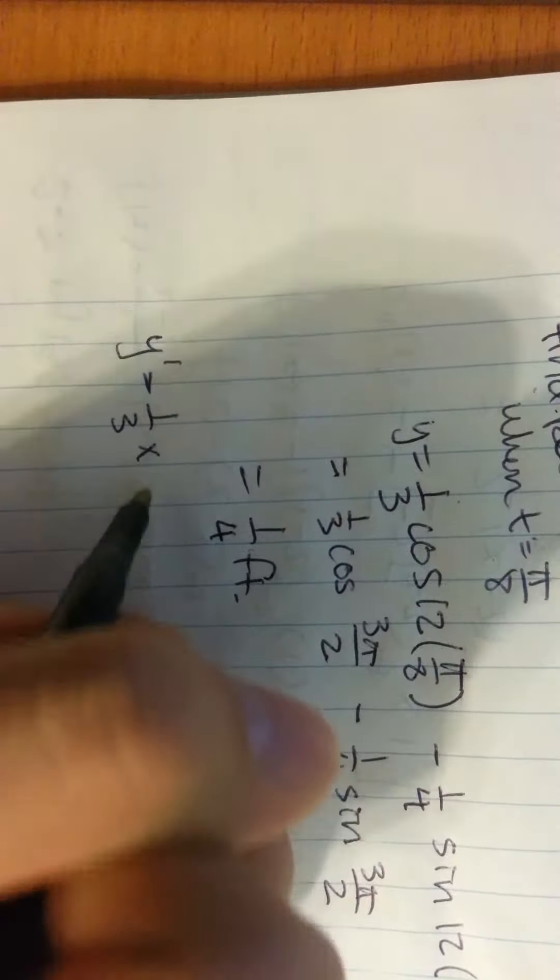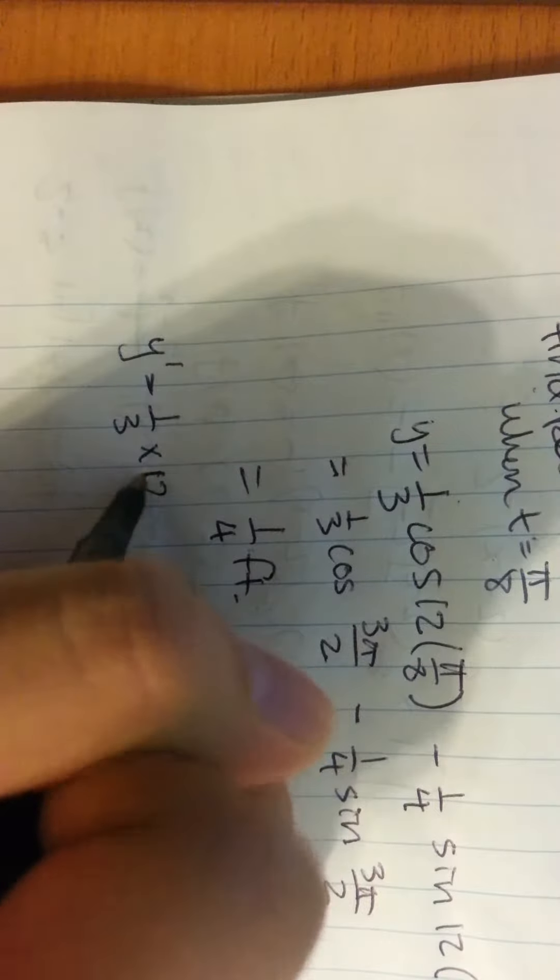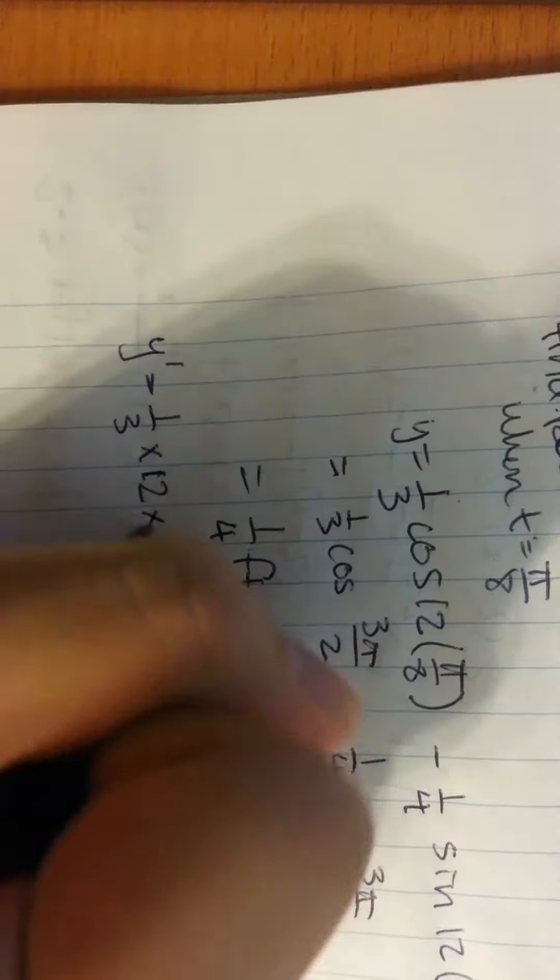So this is 1/3 times 12, which is the derivative of the inside function, times negative sine